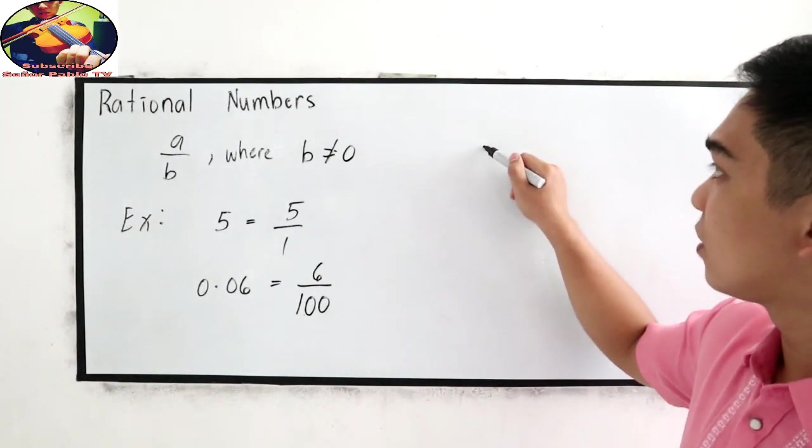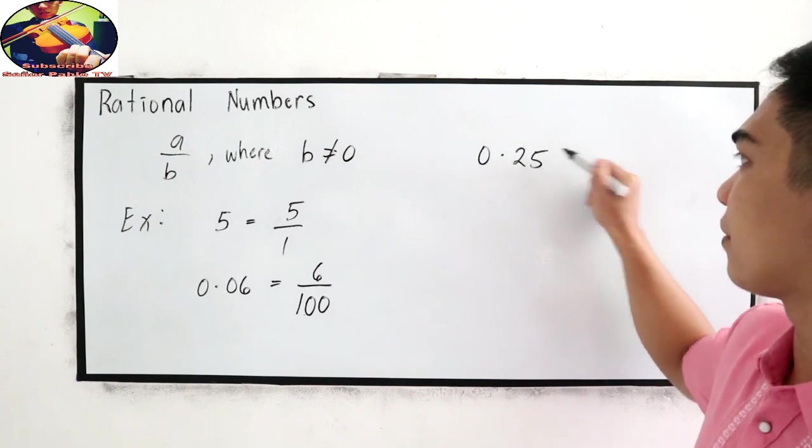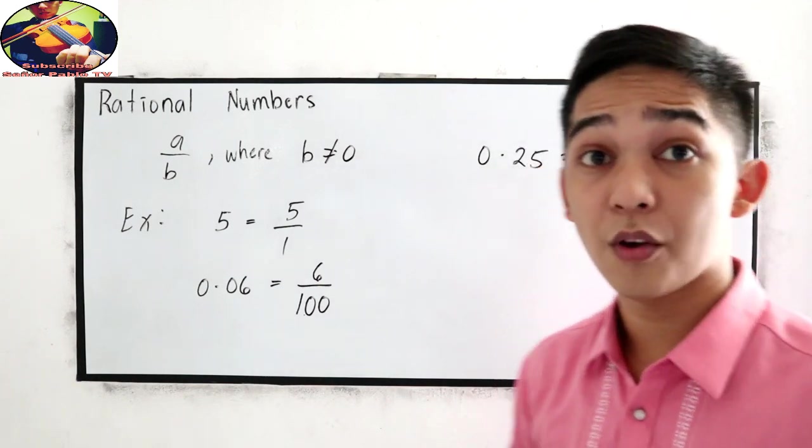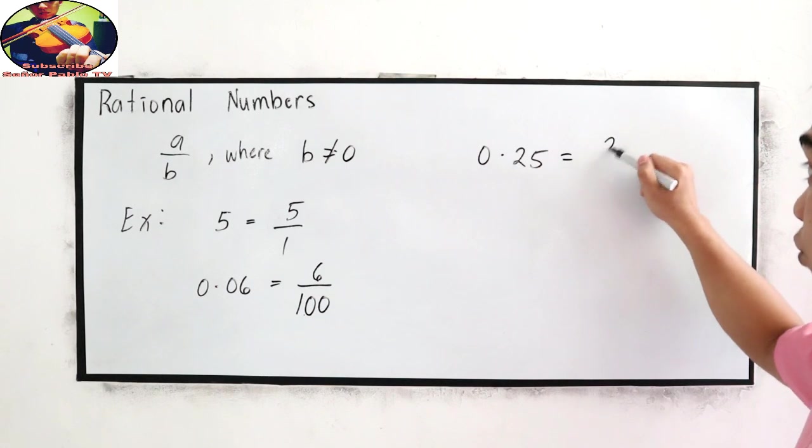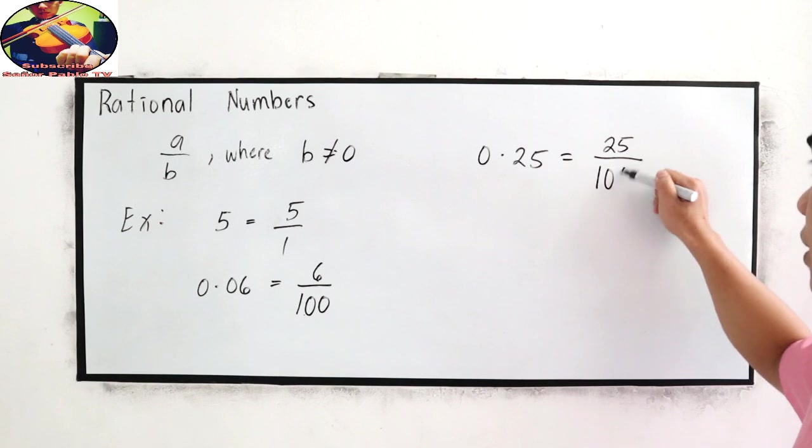Let's say 0.25. This is equivalent to 25 over two decimal places, so two zeros.